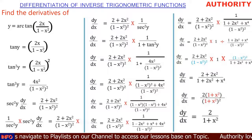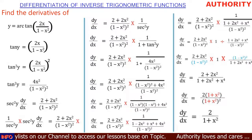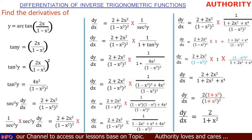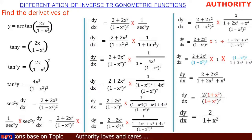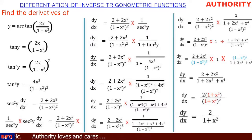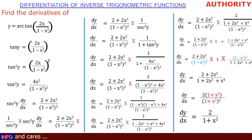So finally, the derivative of y equals arctan of 2x all over 1 minus x squared is dy/dx equals 2 all over x squared plus 1. Please watch the video carefully, step by step, and make sure you practice.